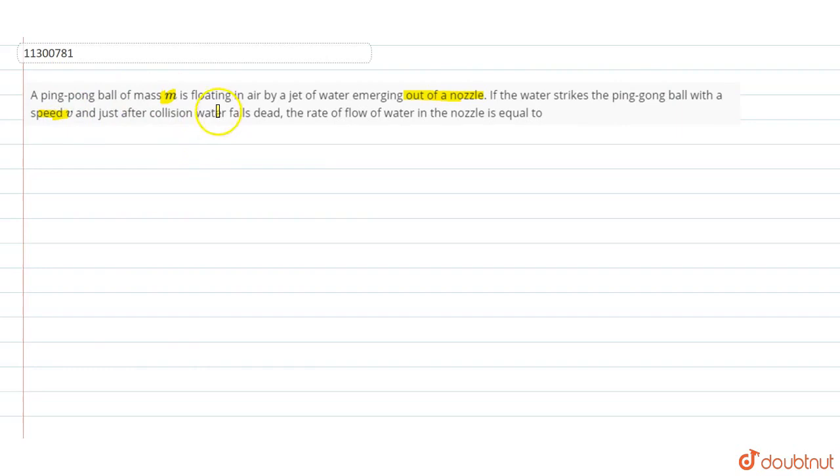And just after the collision, the water is dead. What does it mean? The velocity of the water is zero. The rate of flow of the water in the nozzle - we need to find the rate of flow of the water in the nozzle. Now, delta M mass from the nozzle per unit time collides. So what is the change in momentum?